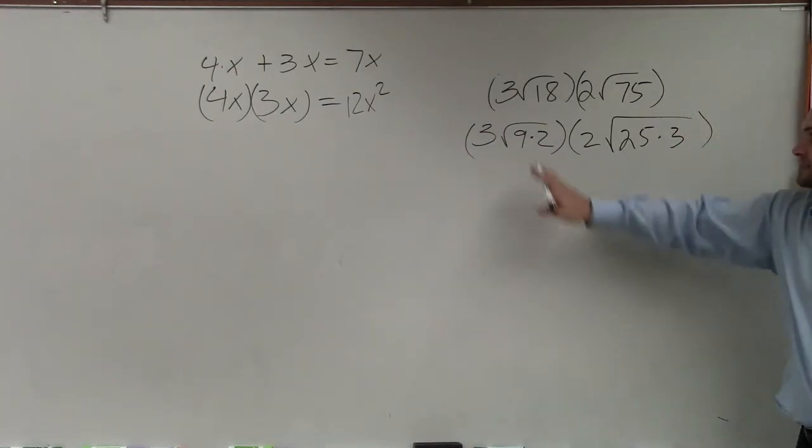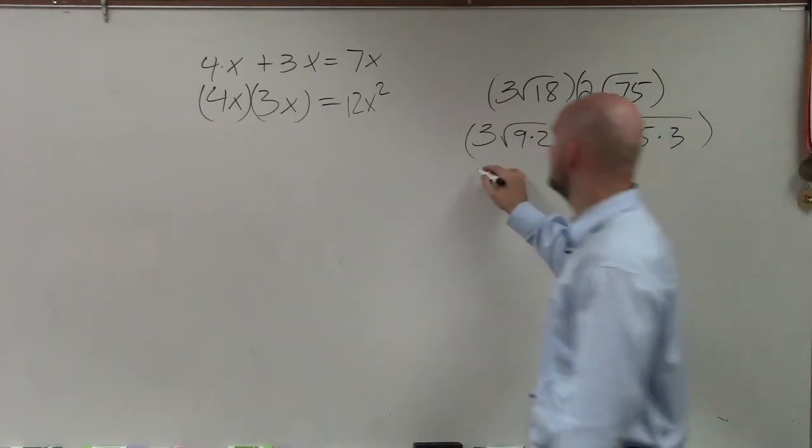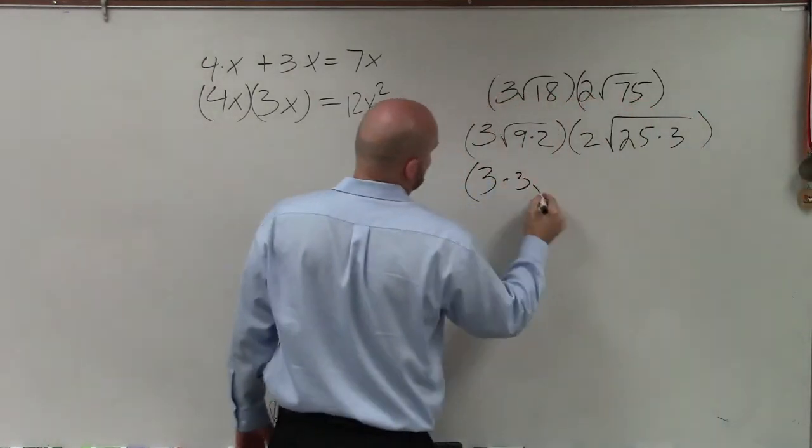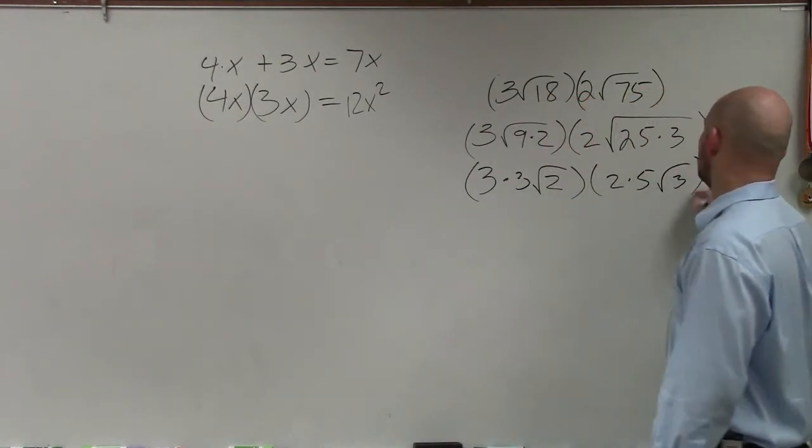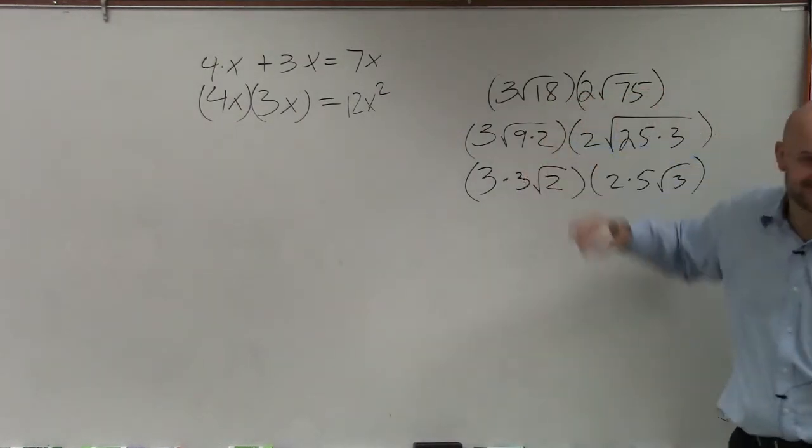Everybody follow me? We can take the square root of 9 and the square root of 25. So we have 3 times 3, times square root of 2, times 2, times 5, times square root of 3. What's going to be moving for now? Sorry, I'm just getting very excited.